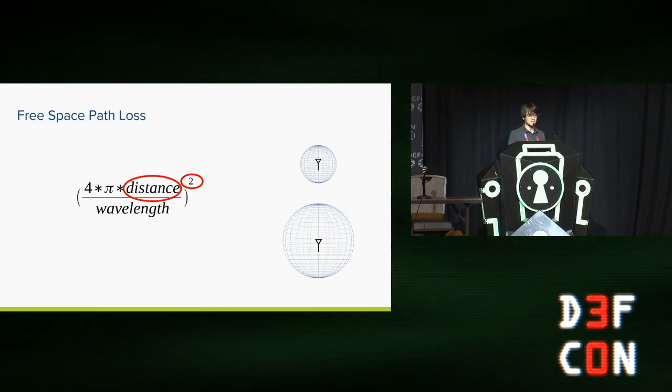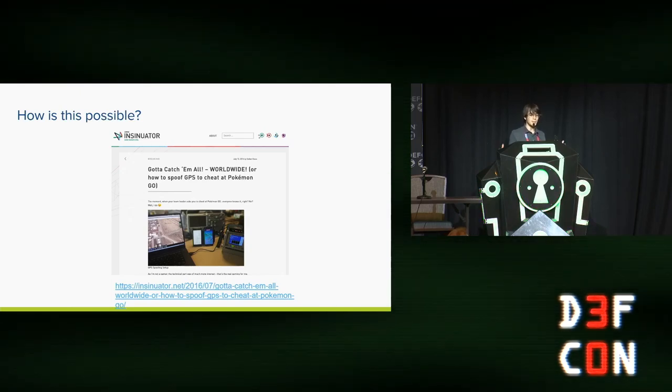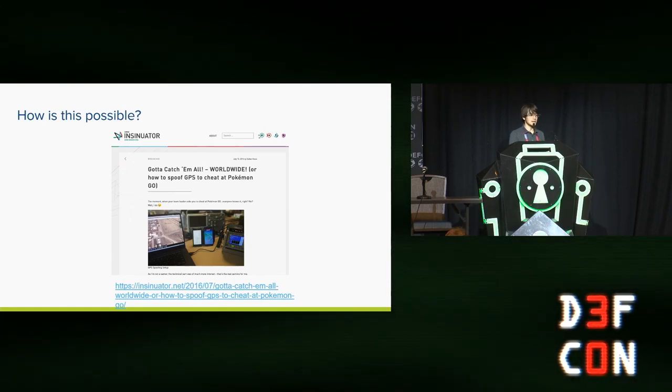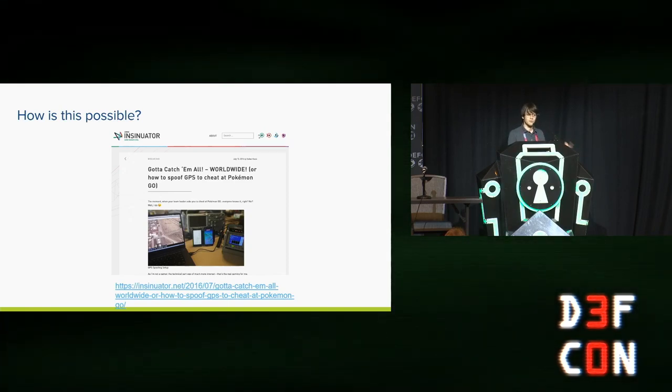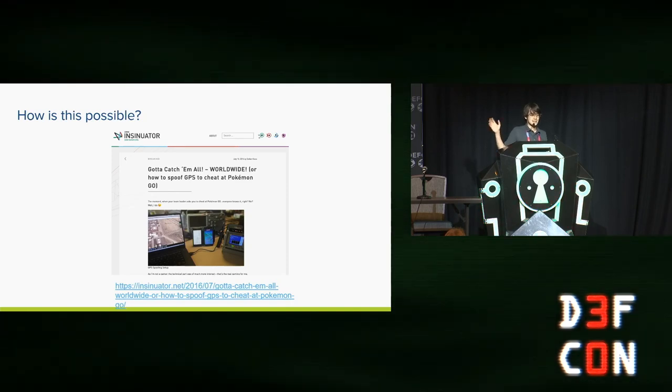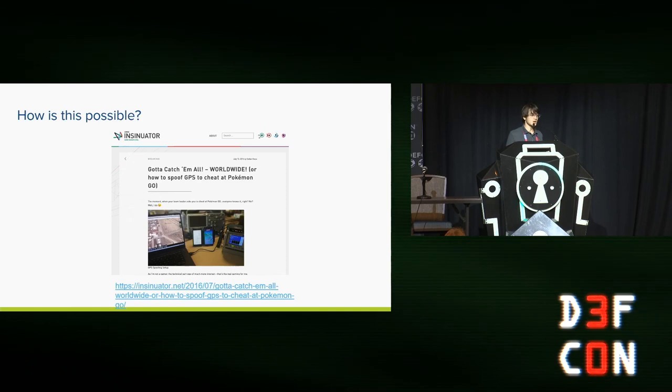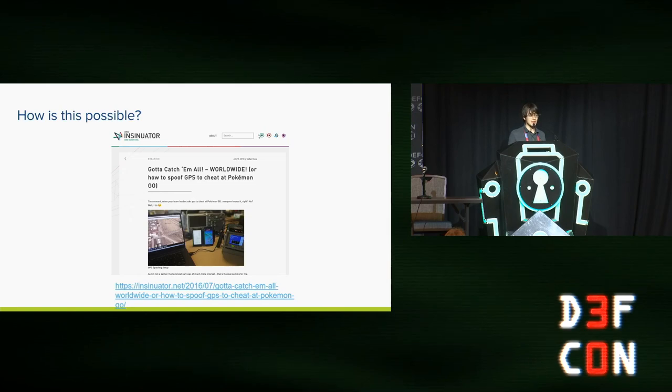So this concept of free space path loss is why attacks like this are possible. So this is a news article from 2016 when Pokemon Go was really popular about people who were using software-defined radios to spoof their GPS signals and cheat at the game and basically appear in different continents and stuff. And if you aren't super familiar with radio jamming, this might not make any sense to you, right? Like a GPS satellite is a billion-dollar government project. It's got to have a great, powerful, really high-end transmitter. Software-defined radios like 200 bucks off the shelf. So how can you win out?